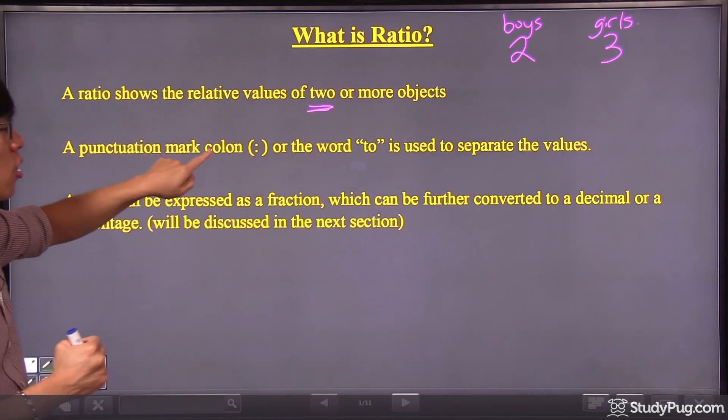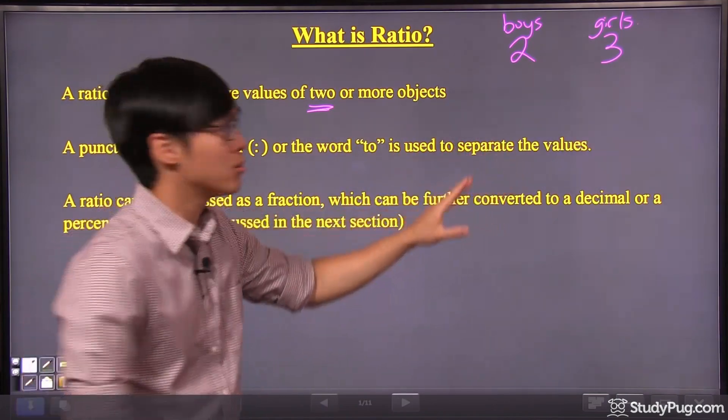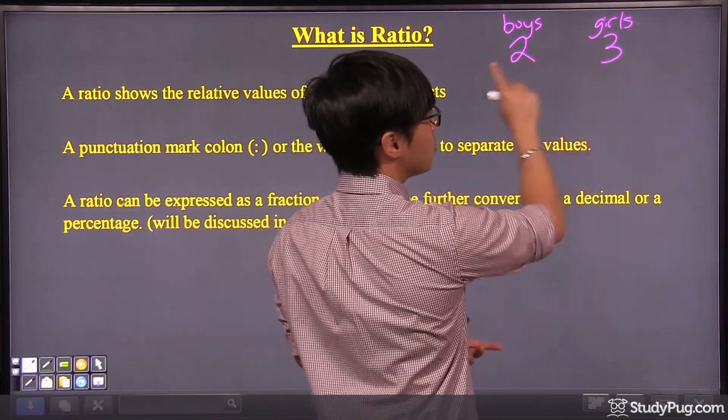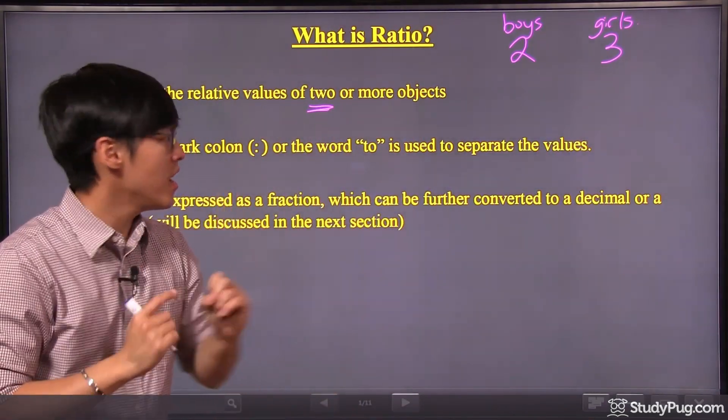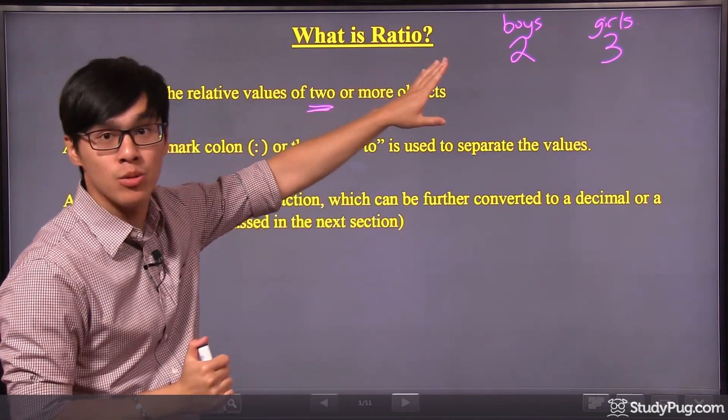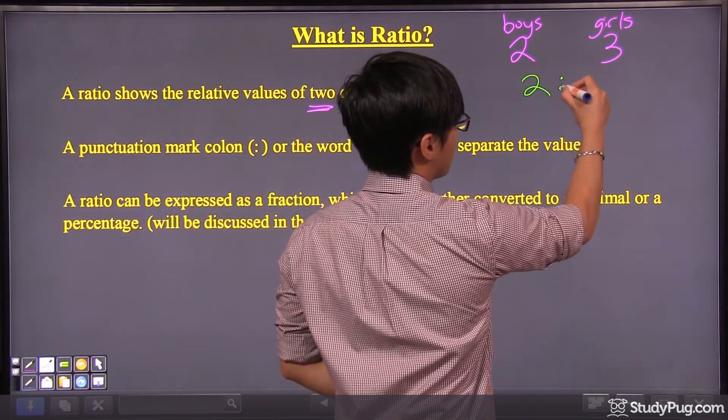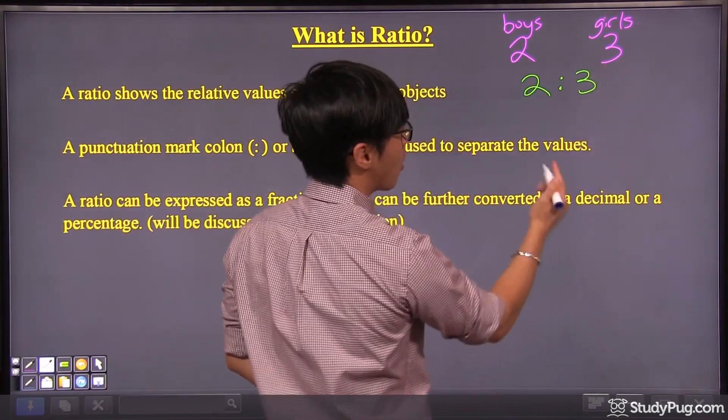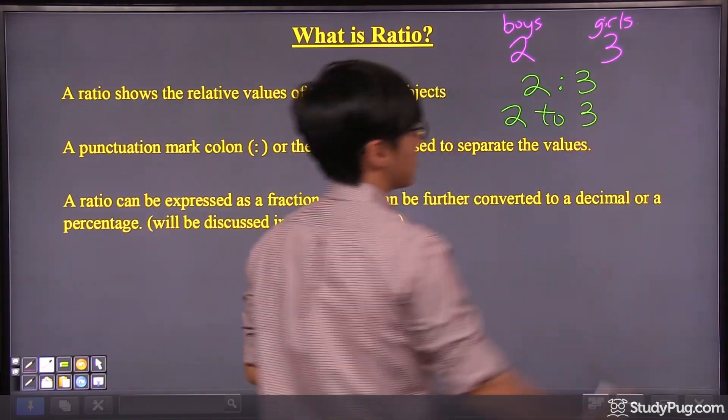A punctuation mark colon or the word 'to' is usually used to separate the values. So here we have the two values, two and three. We want to express it as a ratio, then we will have to put a colon or 'to' in between the two numbers. Over here we can either write two colon three or we can write two to three.